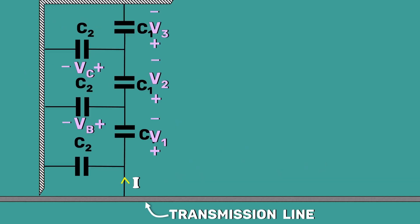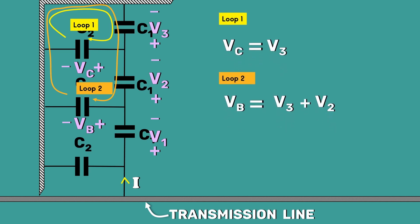Now, applying Kirchhoff's voltage law in loop 1 and loop 2, we get Vc is equal to V3 and Vb is equal to V3 plus V2.